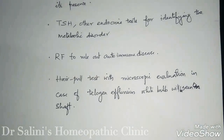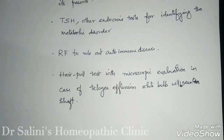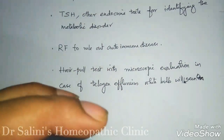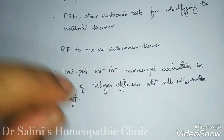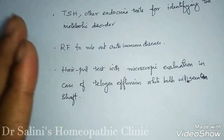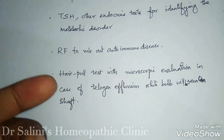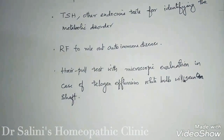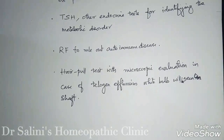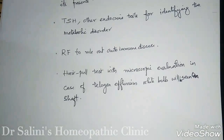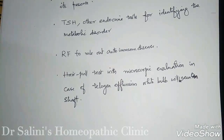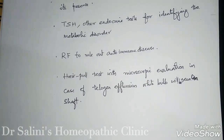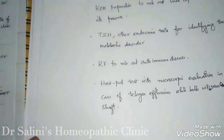For various systemic disorders, we do thyroid tests — TSH, T3, T4 — and other endocrine tests for identifying metabolic disorders. Rheumatoid factor is done to rule out autoimmune diseases. We also do a hair pull test with microscopic evaluation in cases of telogen effluvium. When you pull the hair, if you see a white bulb at the tip, that hair is in the telogen phase — anagen phase hair will be covered with a black sheath. If you find more telogen hairs than the normal 10 to 15 percent under the microscope, it indicates telogen effluvium.